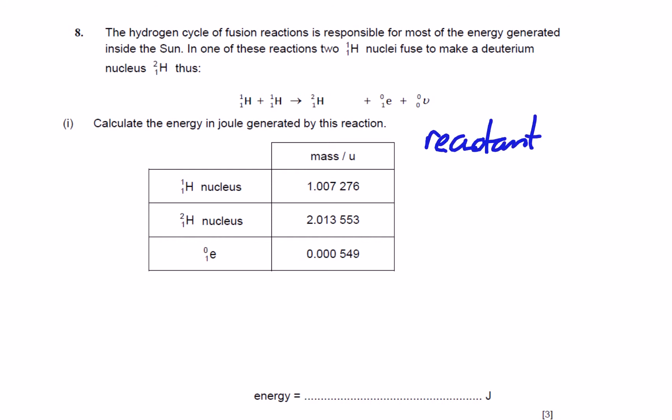So the reactant mass is going to equal two times 1.007276 atomic mass units, which equals 2.014552u.